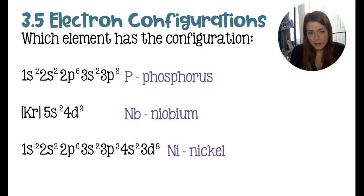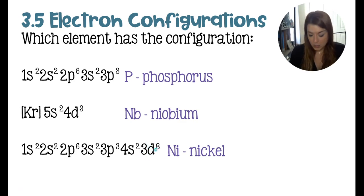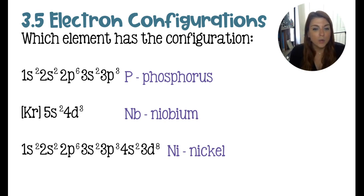For the next configuration ending in 3d, that really means the fourth period. So going to the fourth period d-block and counting eight elements across gives the eighth element in that row.